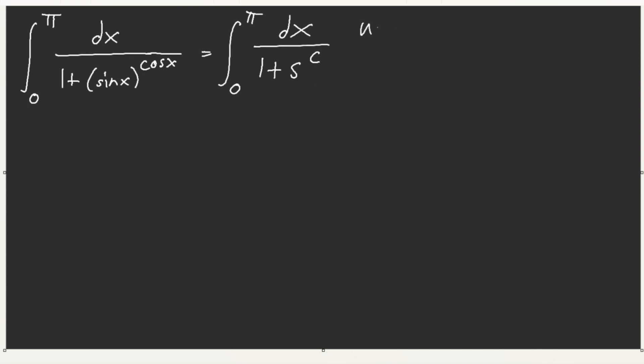Now, if we let u equal pi minus x, all I'm ever going to get is just dx over one plus sine, negative cosine. But now what? How about multiplying top and bottom by sine to the power of cosine? Then maybe this equals to zero pi. Sine cosine over sine cosine plus one dx.